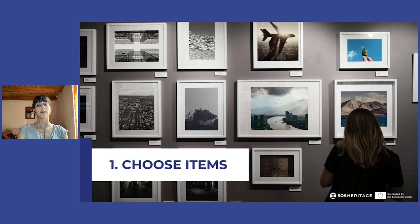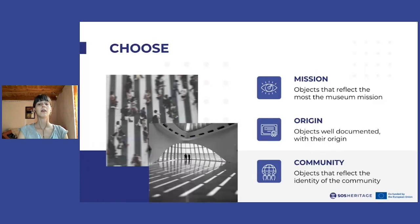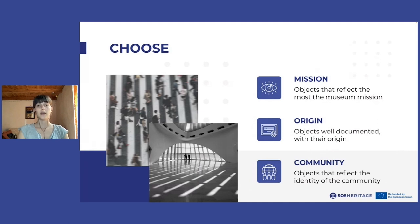It is necessary to be able to take a step back and observe the museum from a broader point of view that also considers its history, the community that revolves around it, and the primary objective of the collection itself. It is therefore good to make a choice starting from three fundamental principles. First of all, the mission of the museum: why was the museum created? Why is it important to that site, to that area? What distinguishes the museum and the collection from others? These fundamental questions should already lay the foundation for a first screening of the collection.